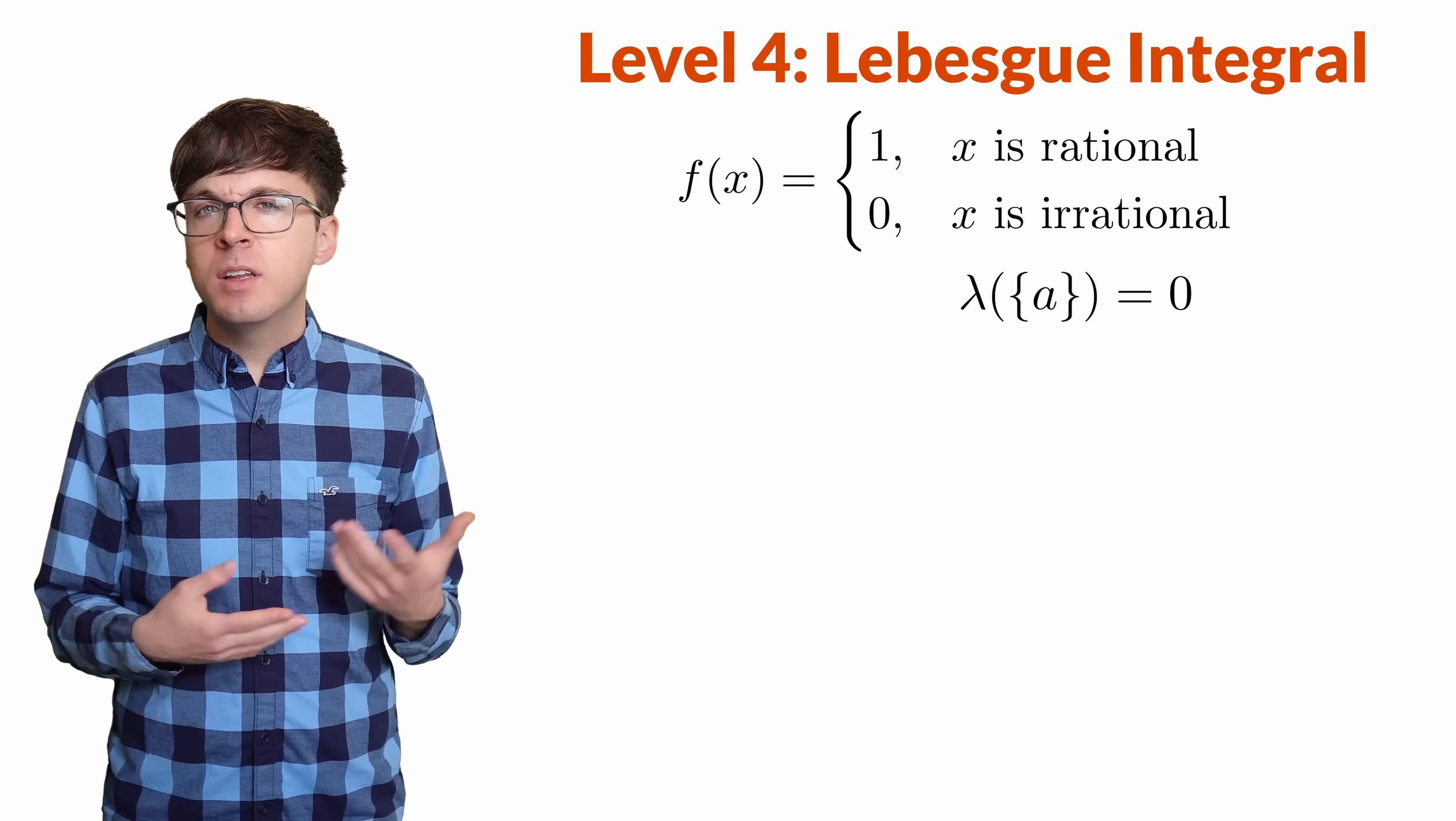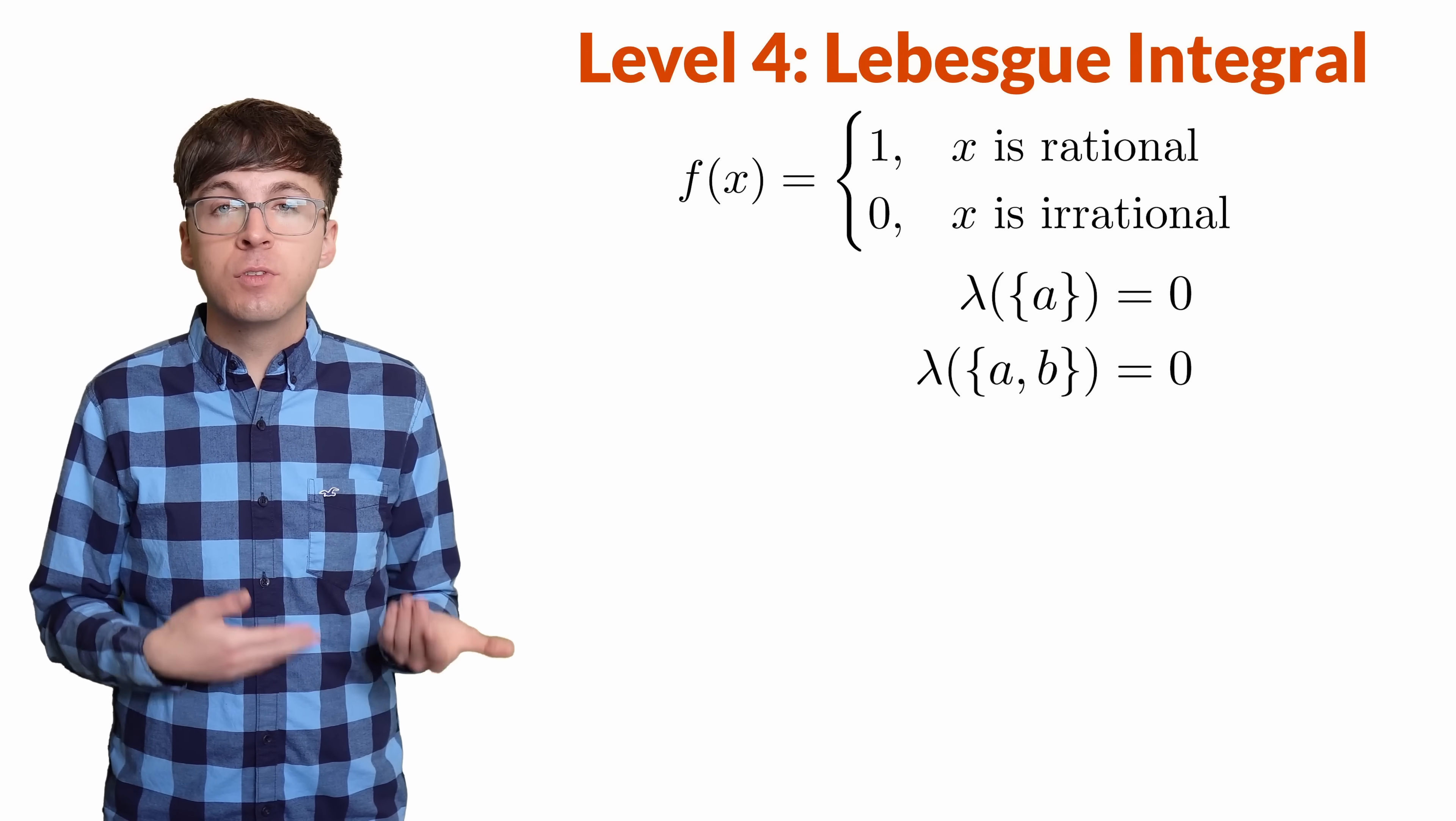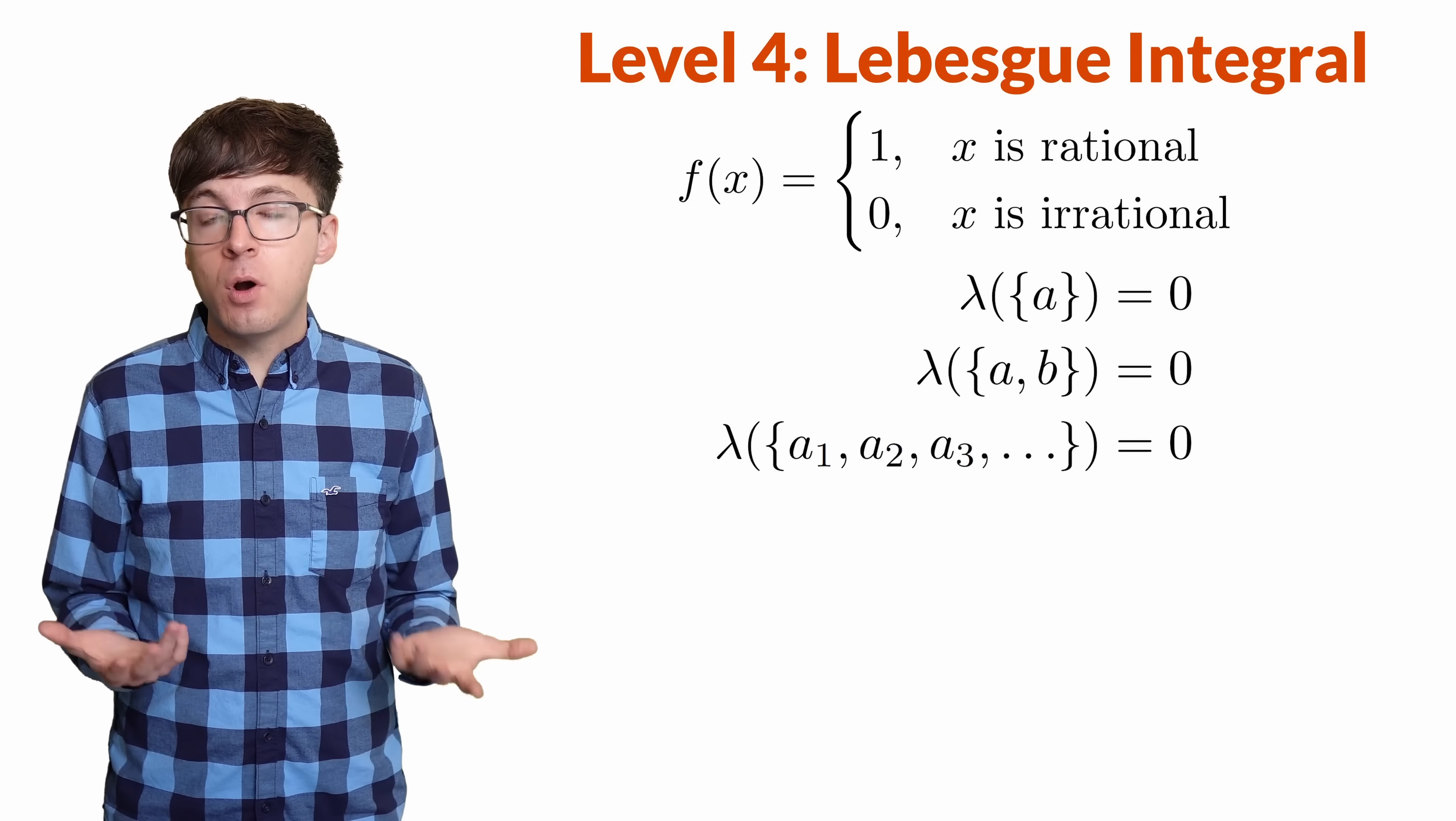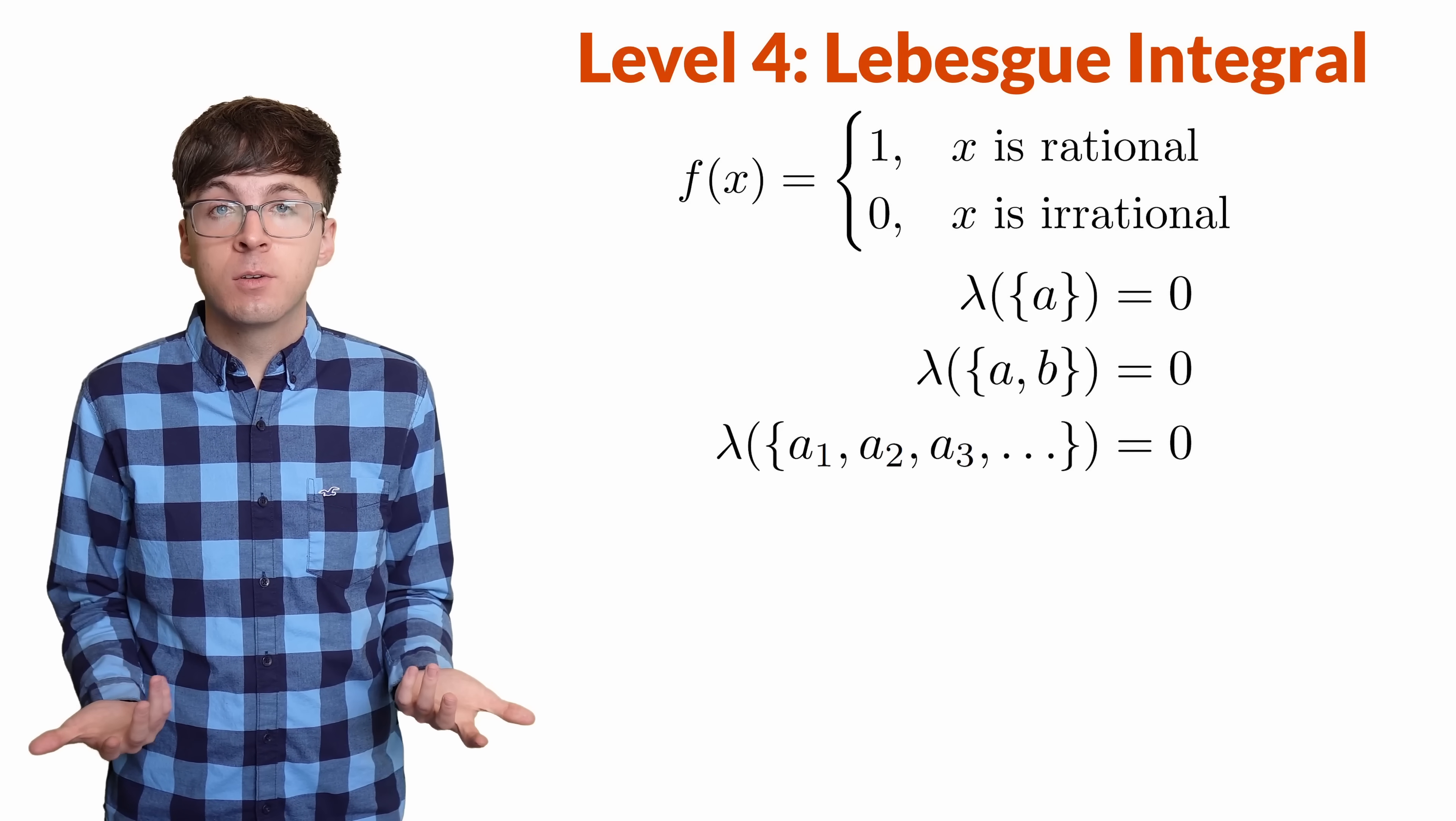What about two numbers? Well, each has measure 0 on its own, so together they have measure 0 plus 0, which is still 0. There are countably many rational numbers, so the measure of all of them should be the same as 0 plus 0 plus 0 and so on, which is still 0.